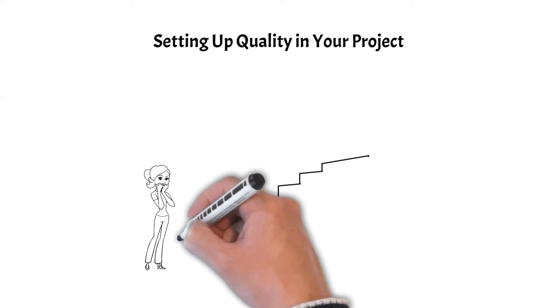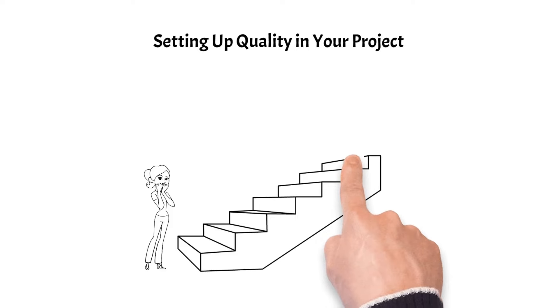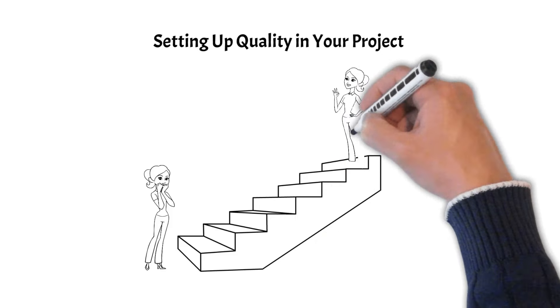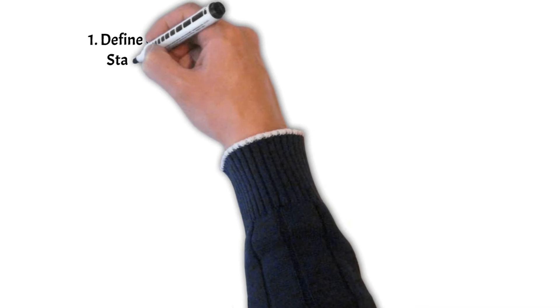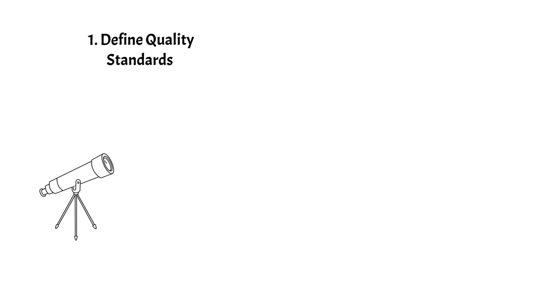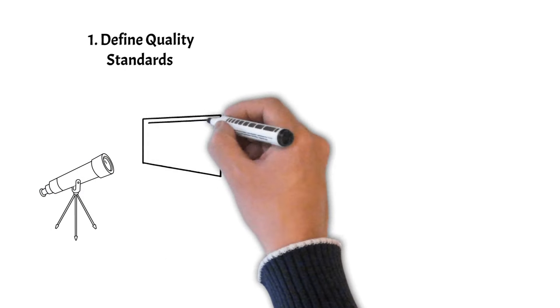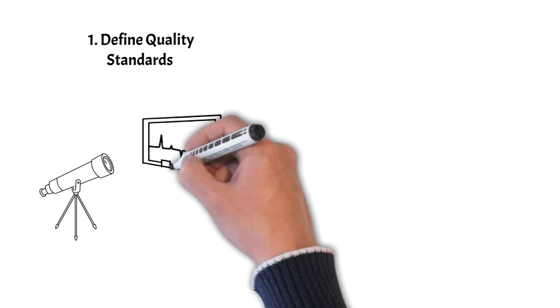Now let's talk about the practical steps to set up quality within your project. First, define quality standards. Start by defining clear quality standards and specifications for project deliverables. This involves identifying what quality means for your project and how you'll measure it.